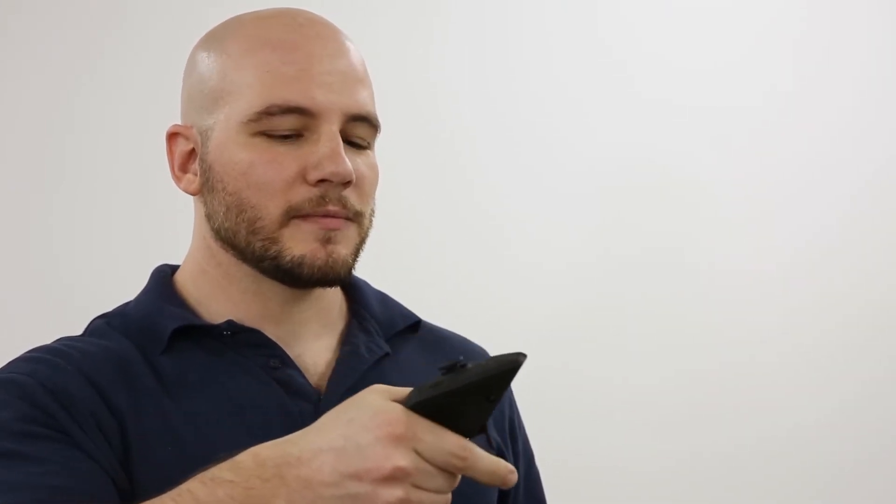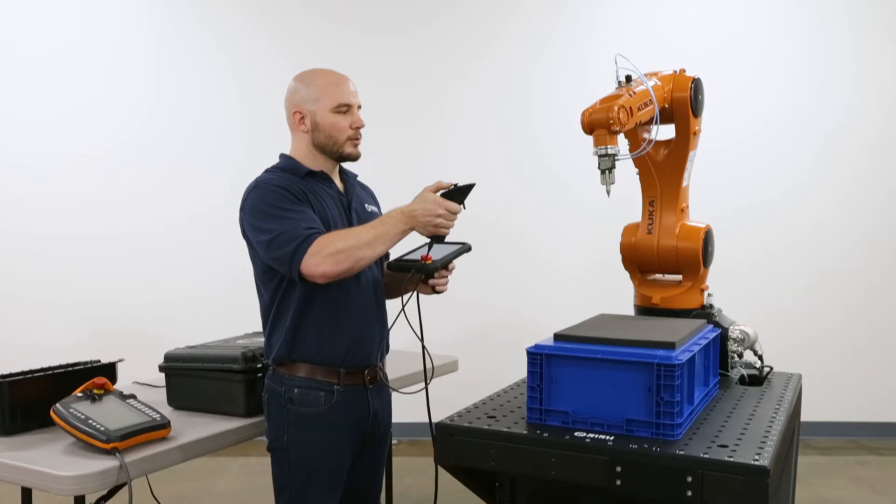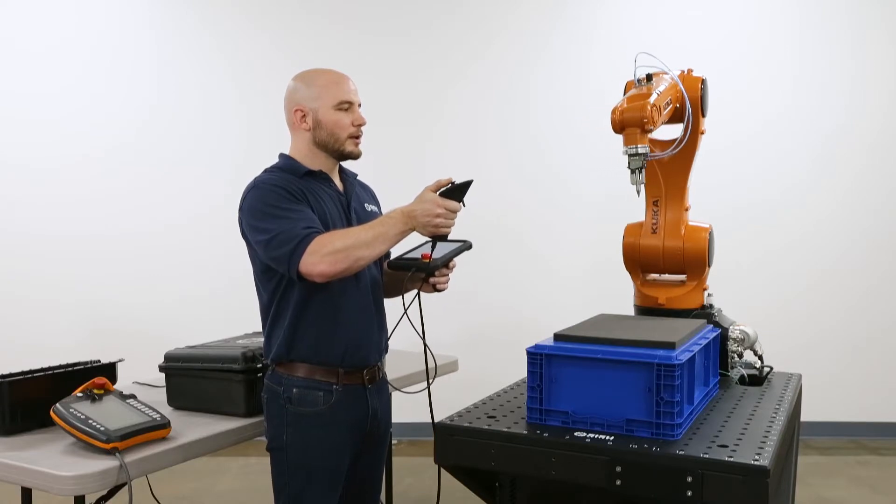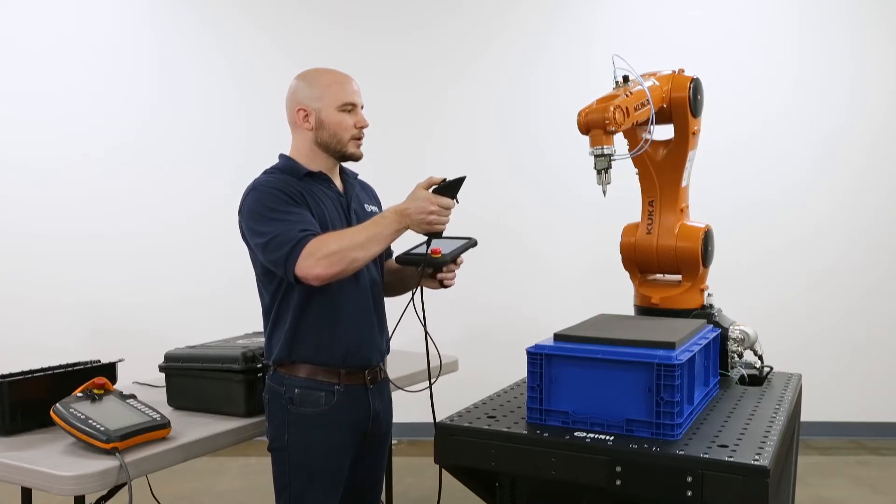The controller also has a joystick for fine adjustment. If I think of the trigger as grabbing the end effector, I can think of the joystick as nudging it. It works exactly the same way as the trigger. Push it away, it moves away. Pull it towards me, it moves towards me.